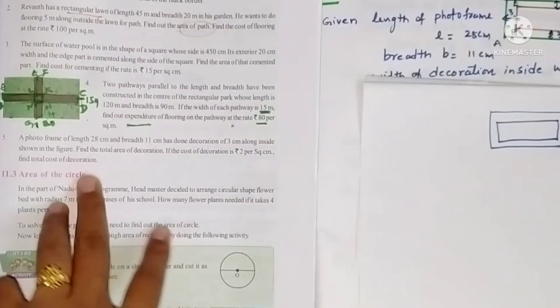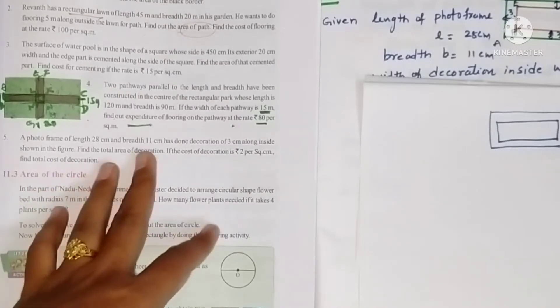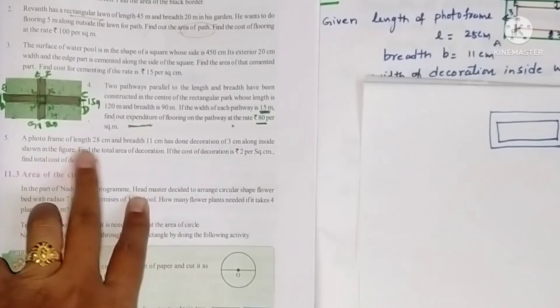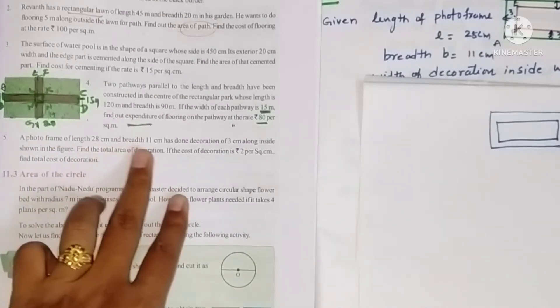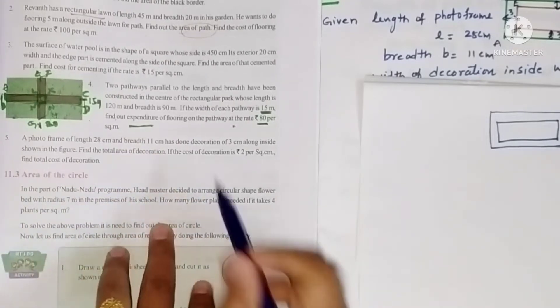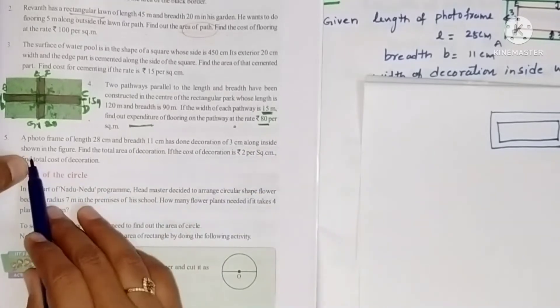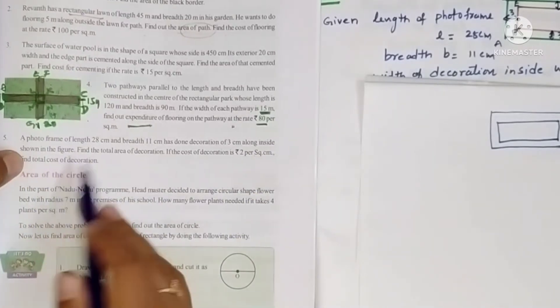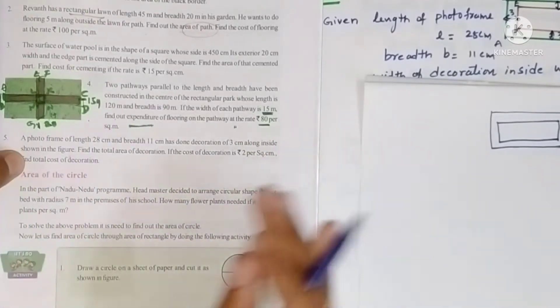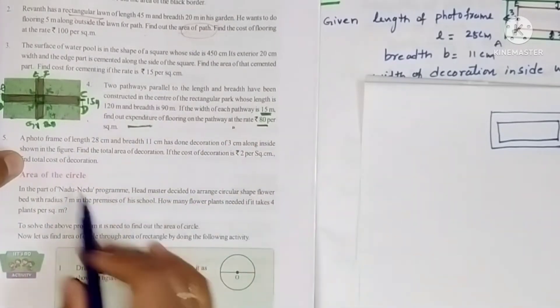Fifth problem, the last problem of this exercise. A photo frame of length 28 centimeter and breadth 11 centimeter has done decoration of 3 centimeter along the inside. Okay, actually the figure is not given but they told it's shown in the figure.